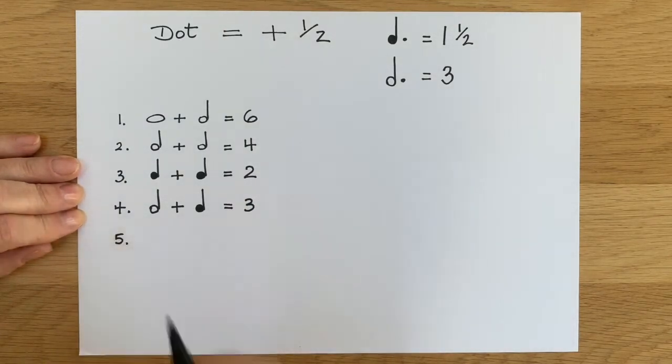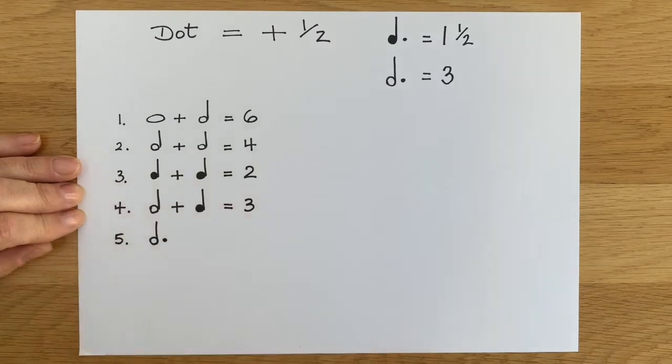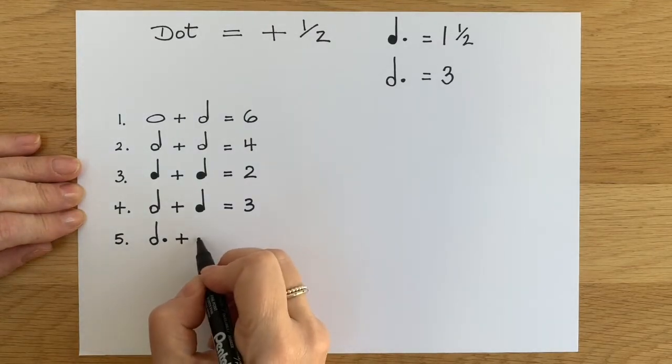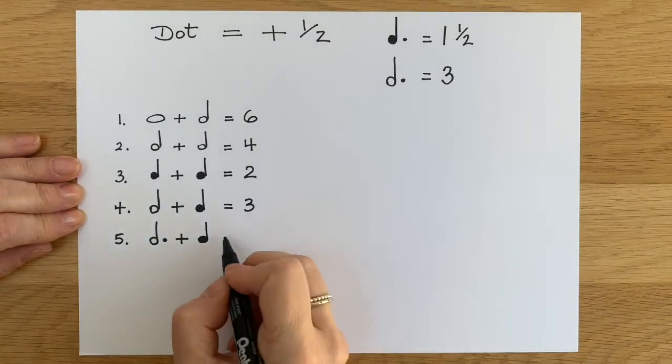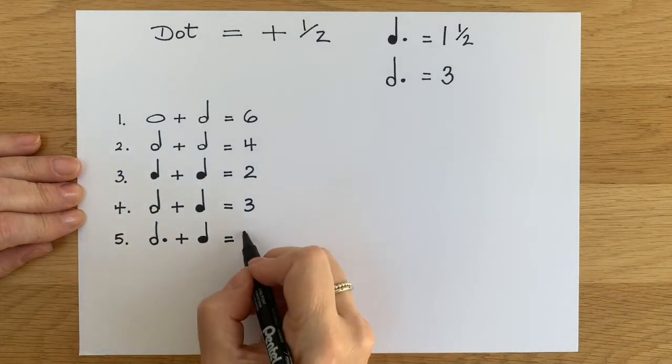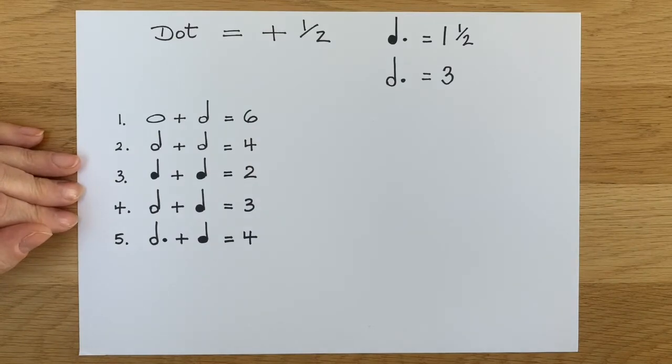This is five. Right, we've got a dot this time. So this is a minim followed by a dot. And then that's coupled with a crotchet. So make sure you know what the dotted minim is worth. Did you get that right? It was four.